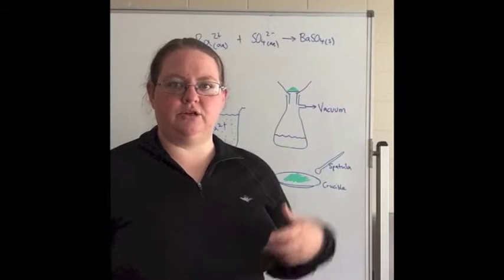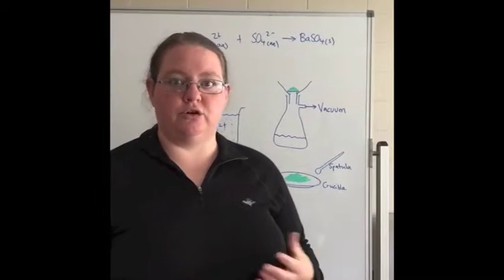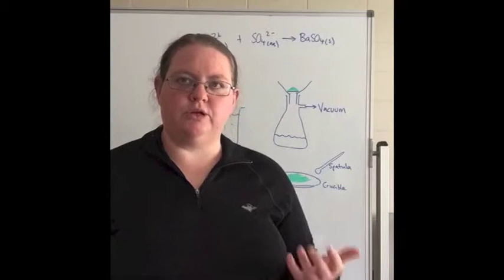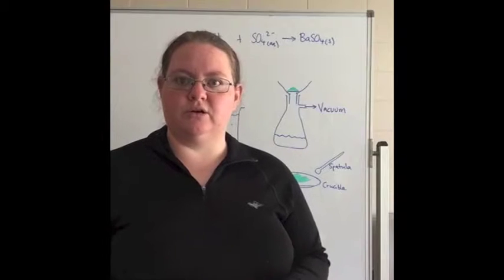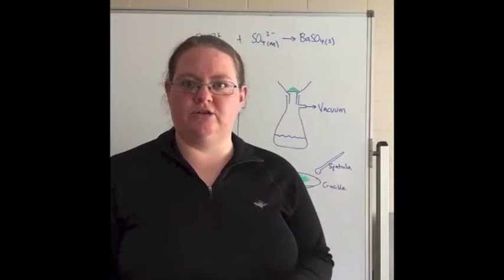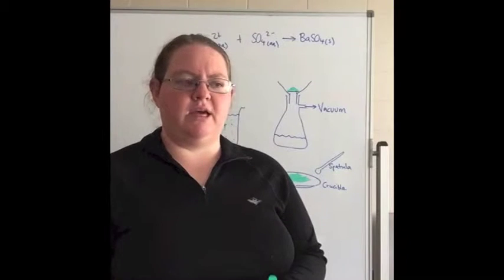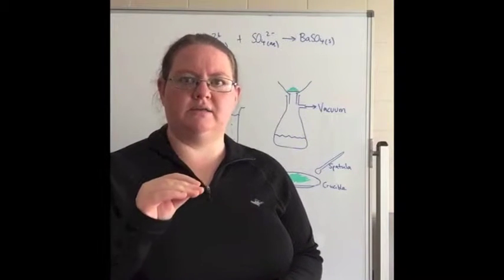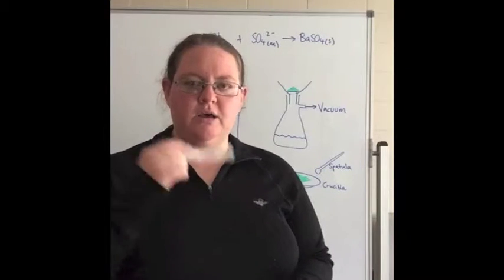Once it's in the crucible, we would need to dry it. Another source of error could potentially be that you don't dry it well enough. What you try to always do is dry it to constant mass or weigh it to constant mass. So you dry it in a 100-degree oven and then you'd weigh it several times to make sure that it's not losing mass from the evaporation of water.